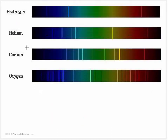Different elements are actually going to preferentially absorb or emit certain colors, certain frequencies, certain wavelengths. I talked about hydrogen - you can see that color right here and this color right here, and there are some we really can't quite see.